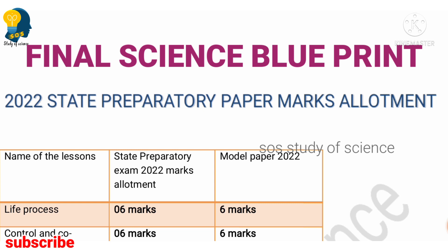By knowing the marks allotment for each and every individual lesson, there is a benefit for two categories of students. The first category is those who are not able to cover all the concepts — they can focus only on particular lessons by knowing the number of marks. The second category is students who are studying very well — they can plan accordingly by knowing the marks allotted for each lesson, which will increase their confidence level. So without wasting much time, let us know the marks allotted for each lesson.